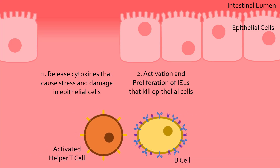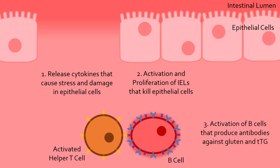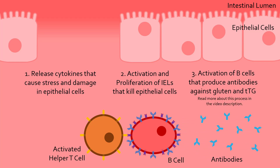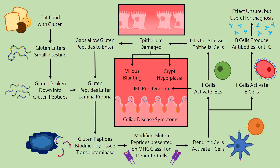Finally, helper T-cells activate B-cells, which make antibodies against these gluten peptides as well as against tissue transglutaminase. Though the extent of damage caused by these autoantibodies is not well understood, they play a key role in diagnosis, as you will see later. To summarize, eating gluten-containing food starts a positive feedback loop, where damage makes it easier for more gluten to enter, worsening the situation and resulting in the symptoms mentioned earlier.